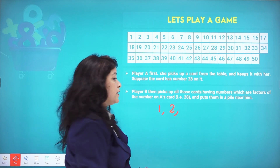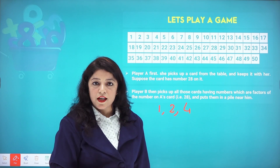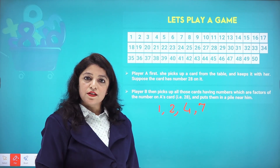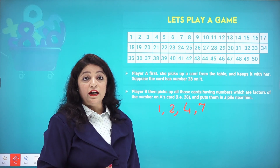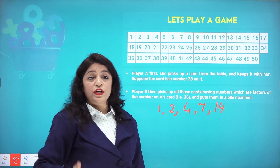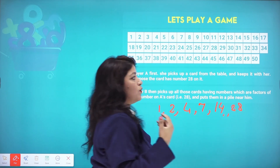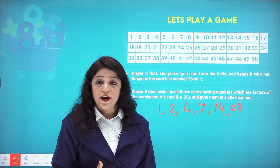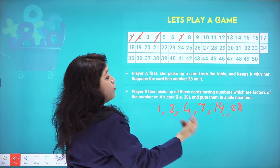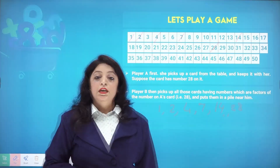4 sevens are 28, so 28 comes in the table of 4. It also comes in the table of 7. And after 7, we find it comes in the table of 14 as well, and of course 28 itself. So Player B will have a pile of numbers: 1, 2, 4, 7, 14, and 28.